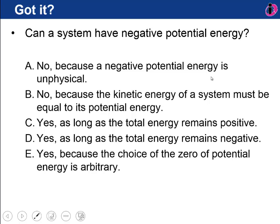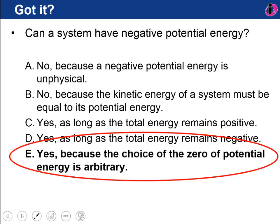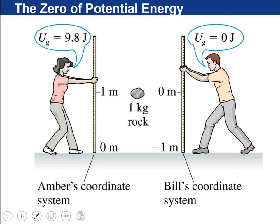So another question for you. Can a system have negative potential energy? I'm not going to read through those answers for you, but two are no, three are yes. Choose the best answer, and I'll tell you what I think. So press pause, and when you resume, I'll give you the answer. Okay, so it is yes that a system can have negative potential energy, and that's because it doesn't matter where you choose the zero potential energy. Total energy can also be negative or positive, so C and D were not the best answers.